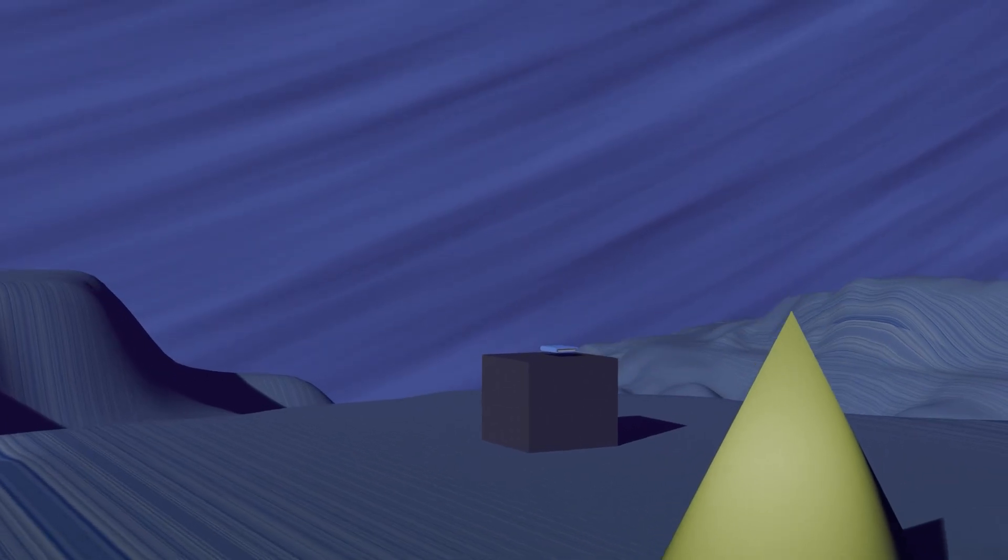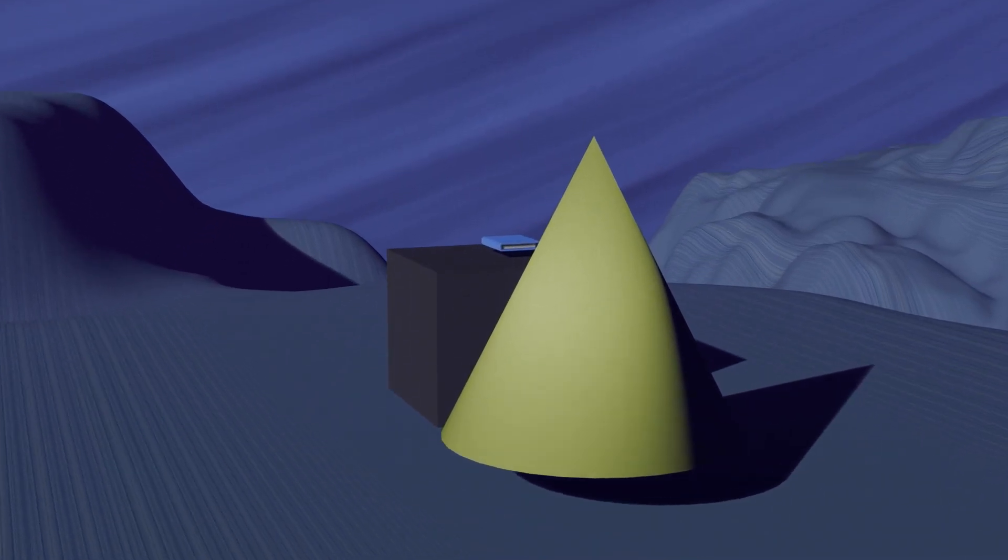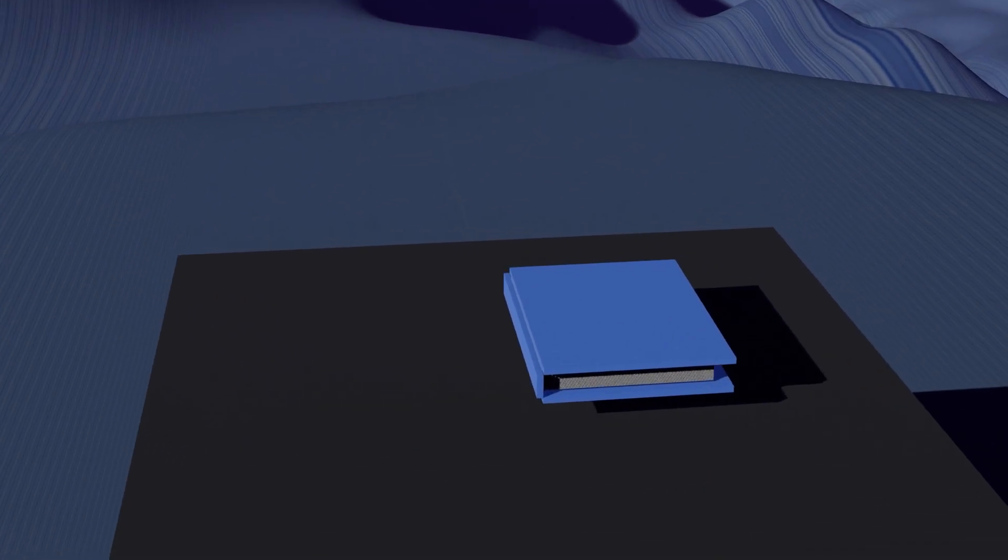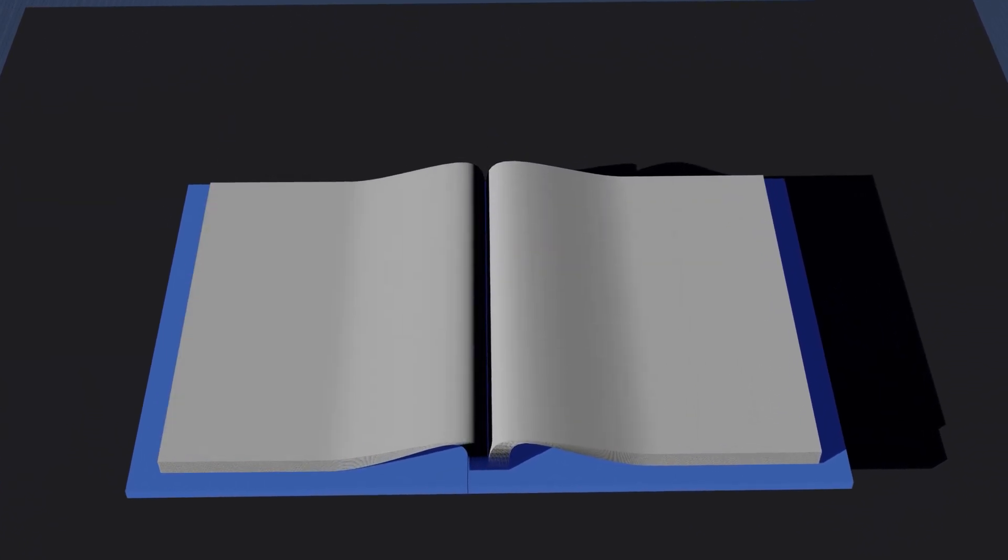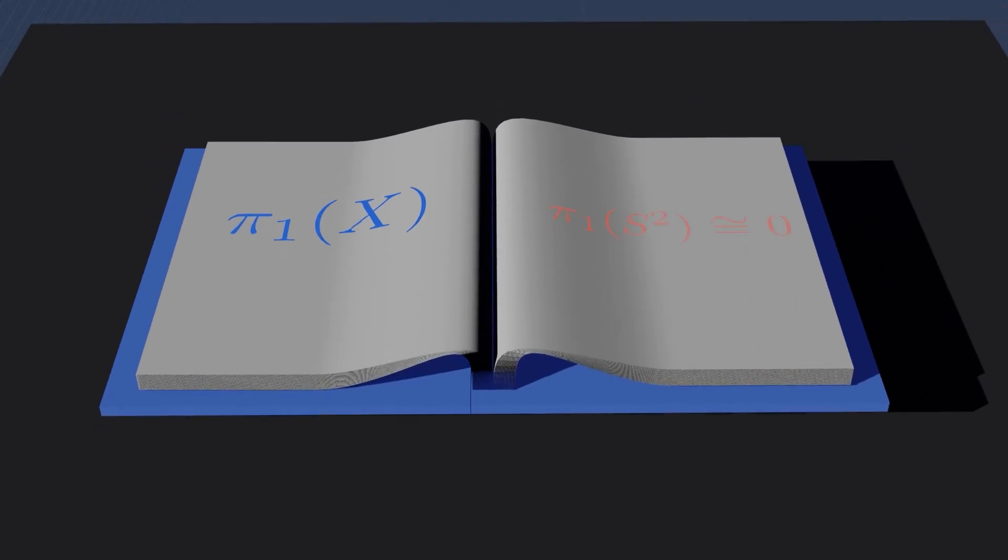You search for answers and find a mysterious idea written by a mathematician named Poincaré. In there, you find your golden answer, a way to determine if your world is truly a donut, without ever leaving its surface.